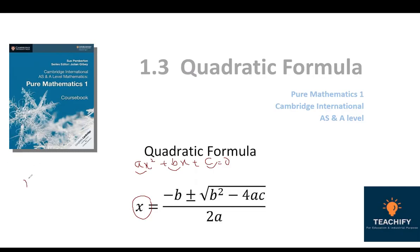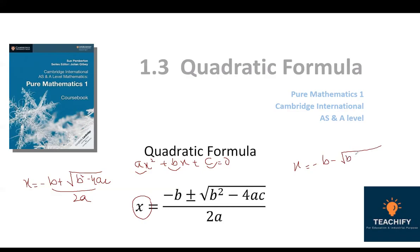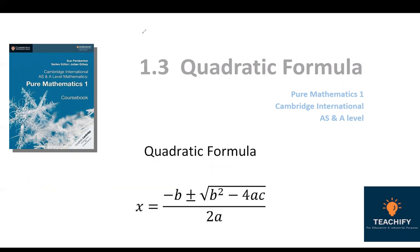For example, x equals to minus b plus under root b squared minus 4ac divided by 2a. Using the quadratic formula, there must be two solutions. The first is with the plus sign under the root, and the second is x equals to minus b minus under root b squared minus 4ac divided by 2a.